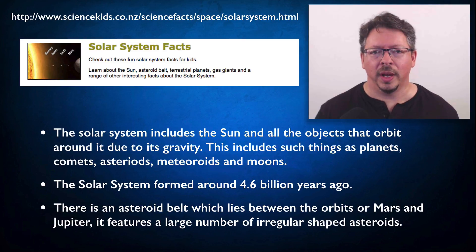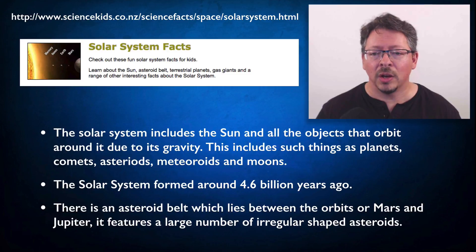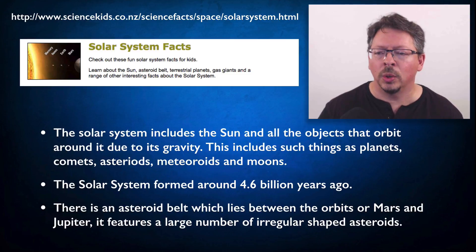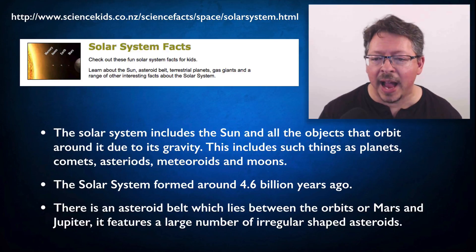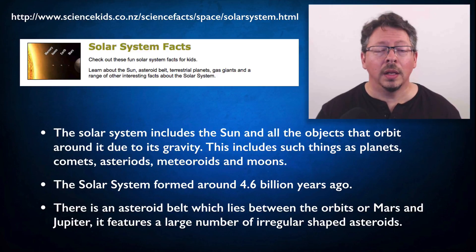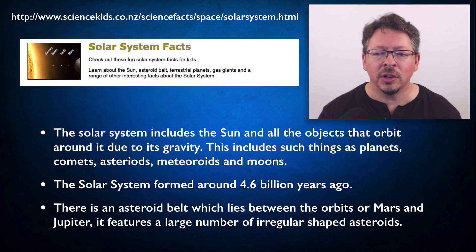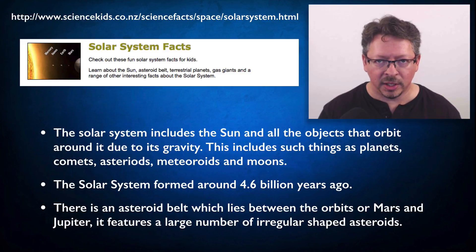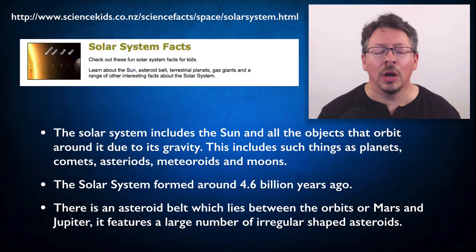We use the term in a similar way to talk about scientific facts. Here's a screenshot from a New Zealand website called Science Kids talking about solar system facts. The text says, 'Check out these fun solar system facts for kids. Learn about the sun, asteroid belt, terrestrial planets, gas giants, and a range of other interesting facts about the solar system,' and then lists bullet points. What does it mean to call this list of claims facts? Note that they're asserted without qualification — 'The solar system formed 4.6 billion years ago. Period.' These are claims regarded as so well supported by the scientific community that you can just assert them as being uncontroversially true.